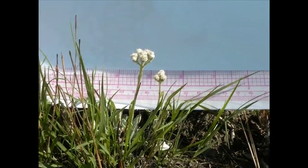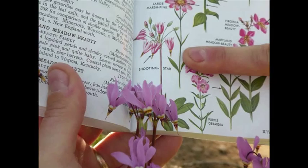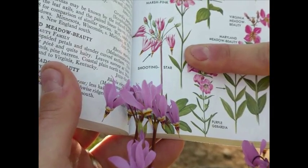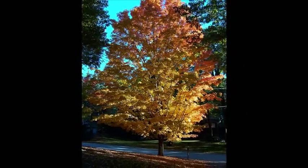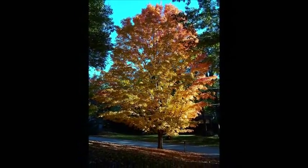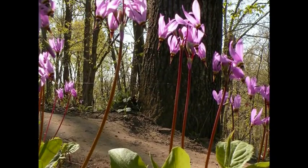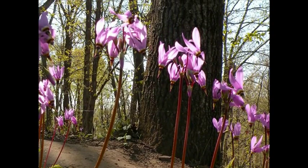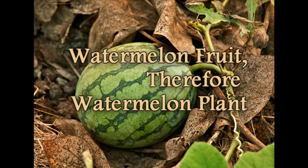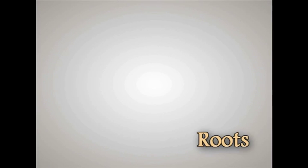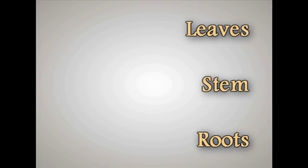Identifying plants requires close attention to detail and knowledge of the structures of plants. The best time to identify plants during the school year is in the fall before leaves are shed, or in the spring after the plants start leafing out and flowering. Identification is easiest when leaves, stems, flowers, and possibly fruits are present. Let's review the three main organs of a plant: the roots, the stems, and the leaves. Pay close attention to these organs when attempting to identify a plant.